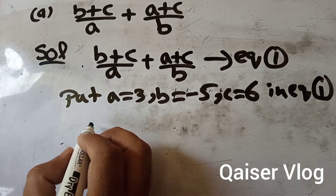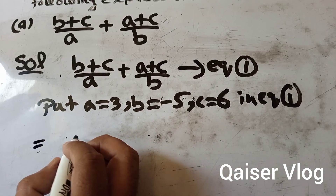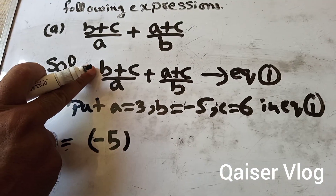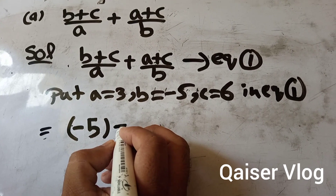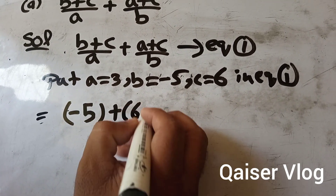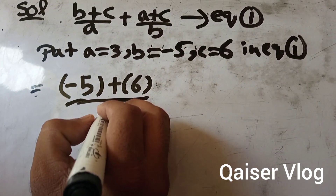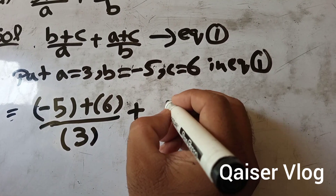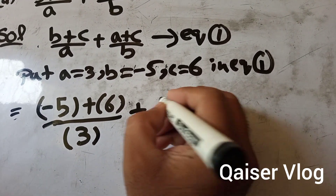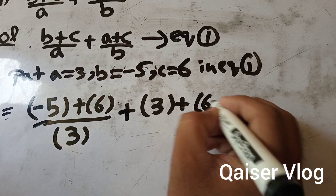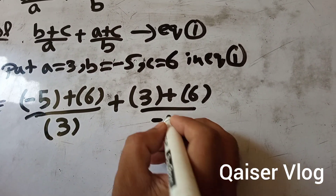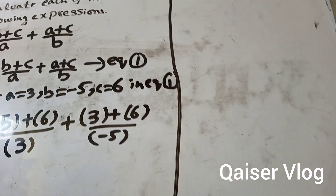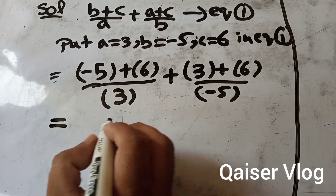Putting the values into equation 1: b will be -5 (written in bracket), then plus 6, then divided by a which is 3. Then plus, then a is 3, and c is 6, divided by b which is -5. These values are all given in the question.